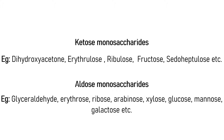Aldose sugars include such sugars as glyceraldehyde, erythrose, ribose, arabinose, xylose, glucose, mannose, galactose, etc.